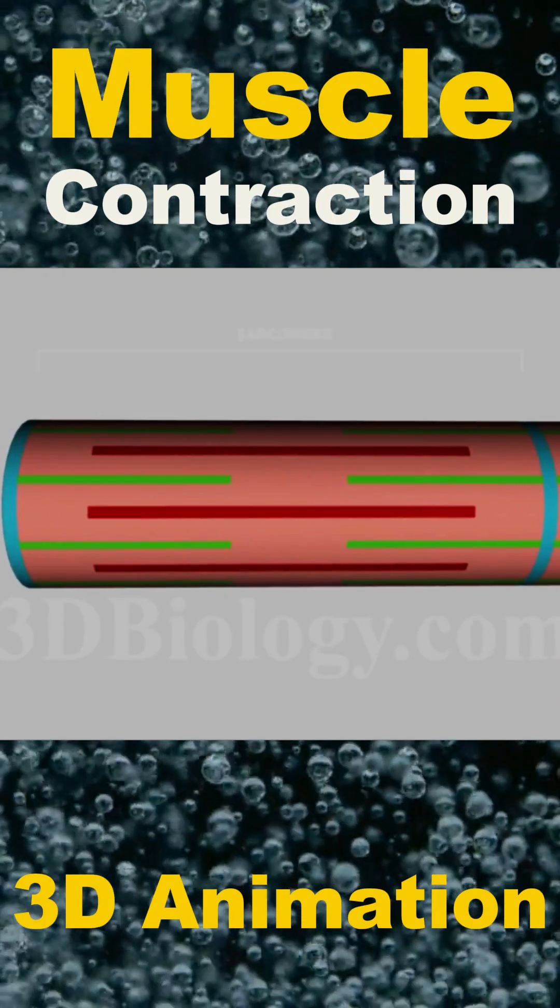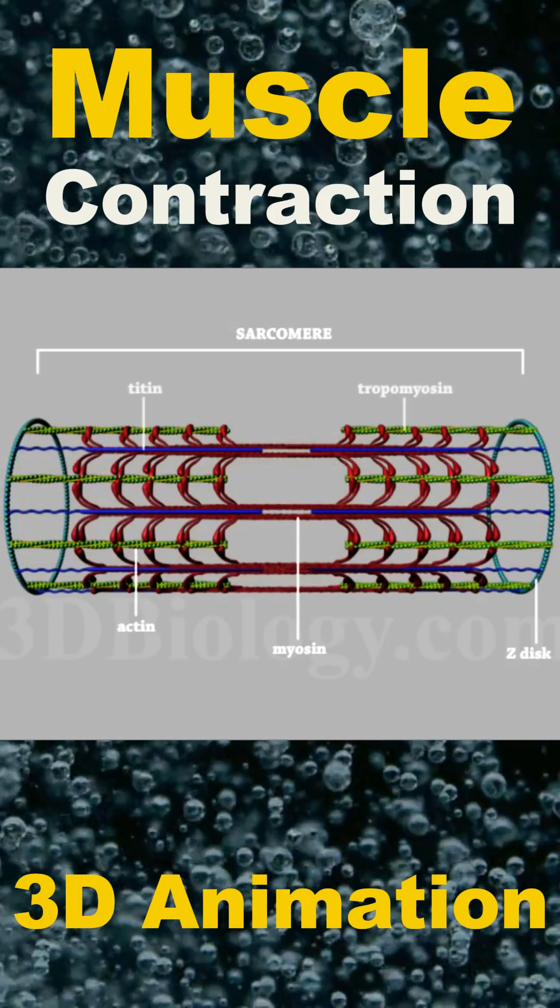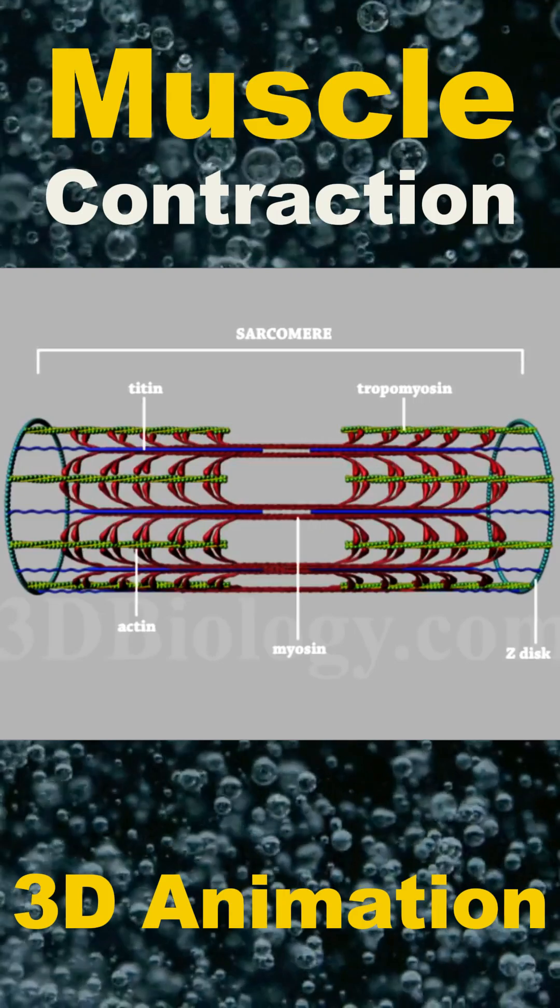A sarcomere, the functional unit of muscle, comprises thick myosin filaments and thin actin filaments. Titin, a protein, maintains the alignment of thick filaments during contraction.